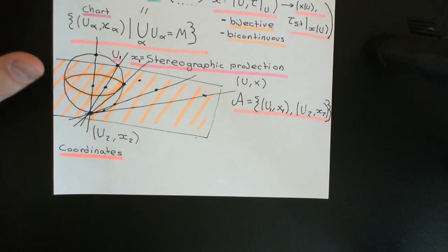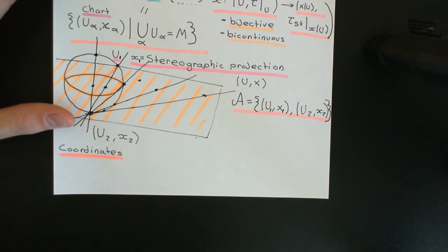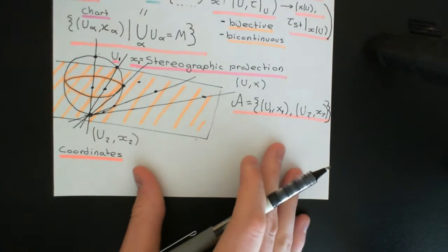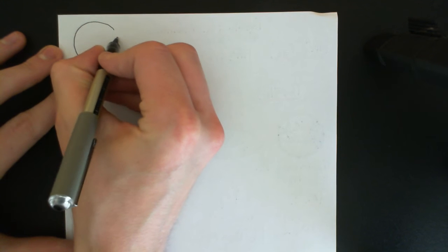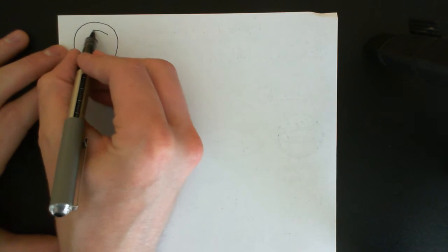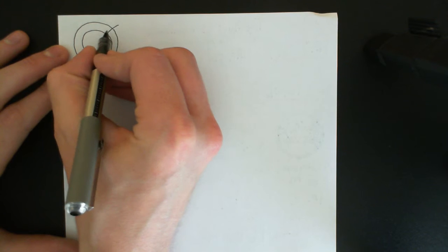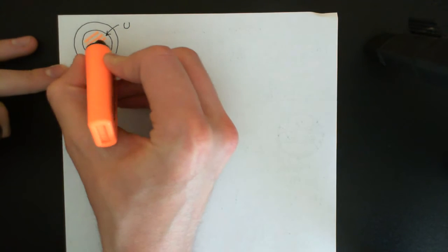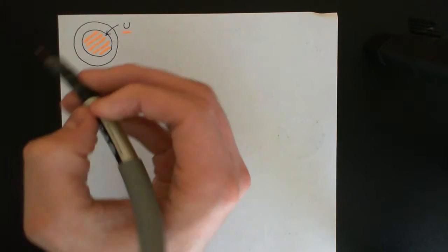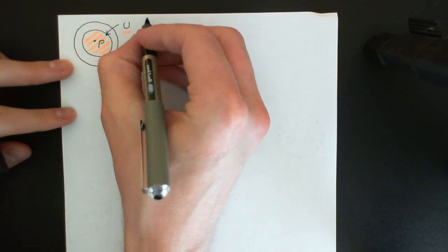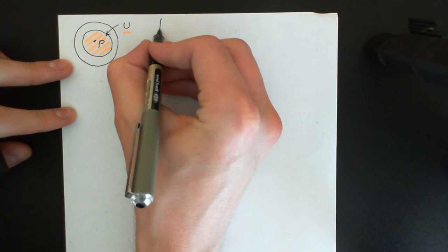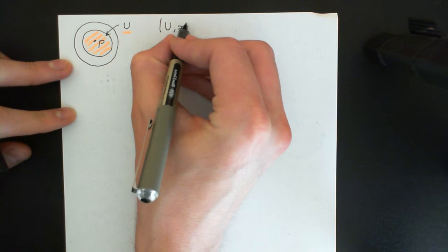So what are coordinates? We've got our topological manifold, and I'll draw pictures. Let's continue with the example of the two-dimensional sphere. We've got some chart domain here which we'll call U, and let's say we've got some point P in this chart domain. Our atlas contains a chart U along with its chart map X.